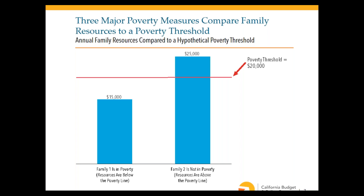All three major poverty measures have a similar structure — they compare family resources, measured in different ways, to a poverty threshold, also calculated differently across the three measures. They look at annual resources compared to an annual threshold. For example, if the poverty threshold were $20,000, a family with $15,000 would be in poverty, while a family with $25,000 would not.